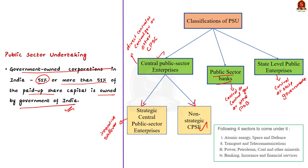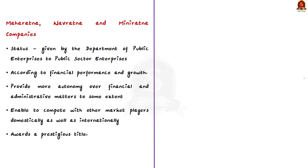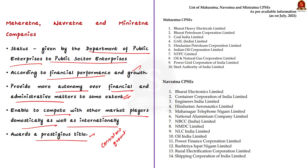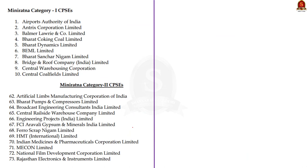When learning about CPSEs, one should also be aware of the Maharatna, Navratna, and Miniratna statuses. These statuses are given by the Department of Public Enterprises to public sector enterprises according to their financial performance and growth. They provide more autonomy over financial and administrative matters, enable companies to compete domestically and internationally, award a prestigious title, and represent the consistent growth of a company.